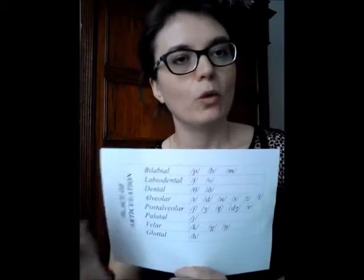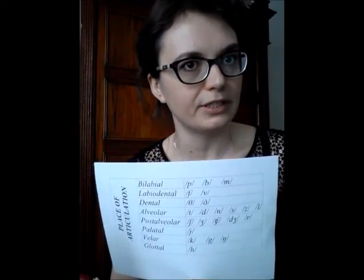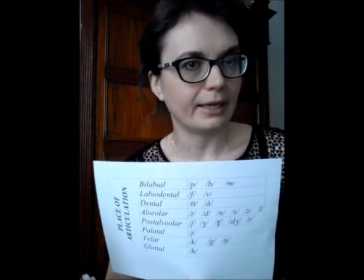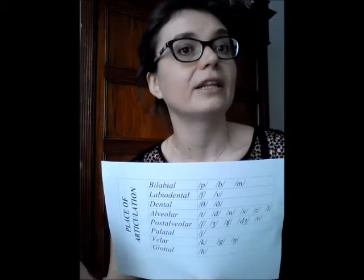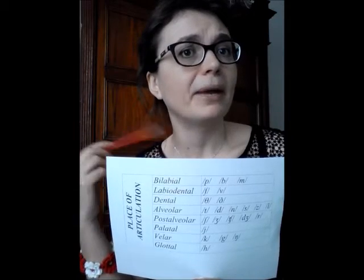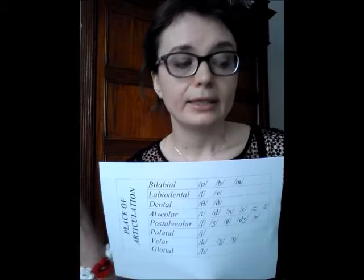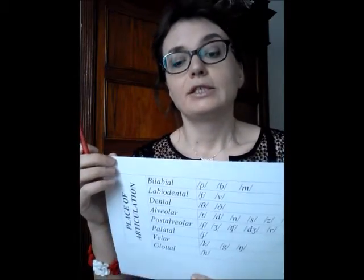I don't know if you have noticed, but the sound W is missing. Why is it so? If we look in the mirror, we see that the lips are involved in the production of this sound, and that would make the sound bilabial. Indeed, it was believed to be a bilabial sound. However, due to technology, it was discovered that not only the lips are involved, but also the back of the tongue moves towards the velum. That's why this sound is called a labial-velar sound. So that would be all concerning the place of articulation of consonants. Next time I'd like to deal with the manner of articulation of consonants.